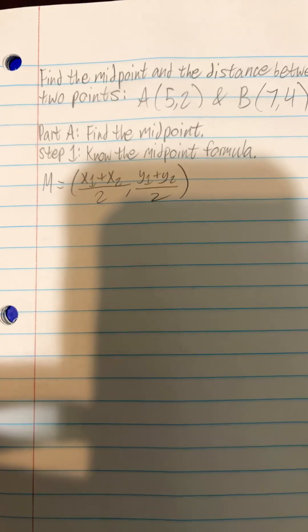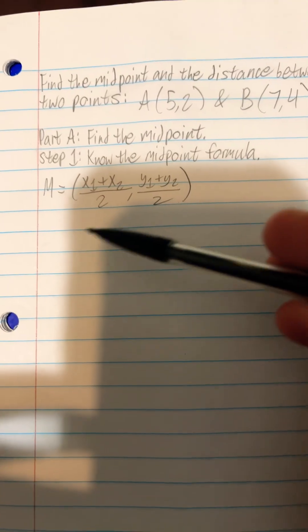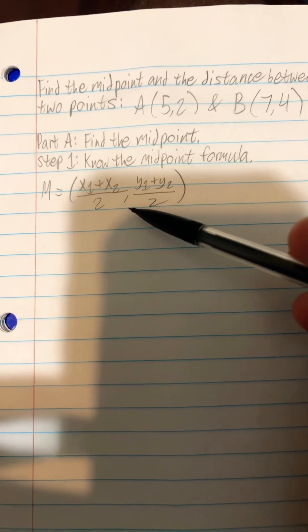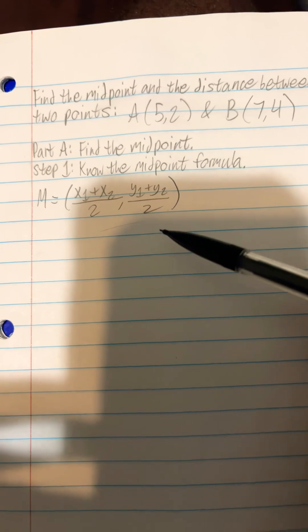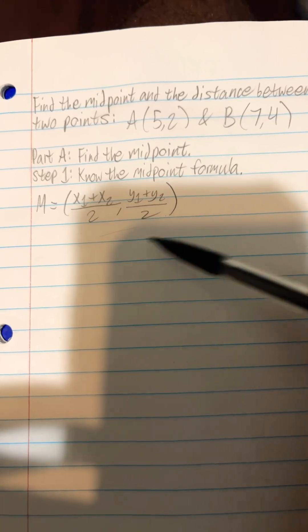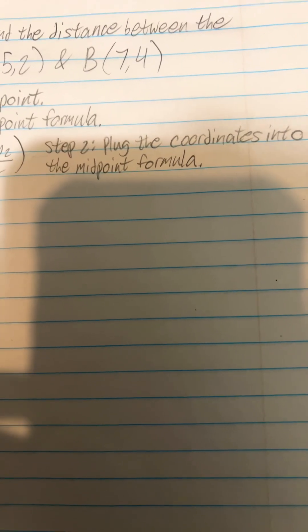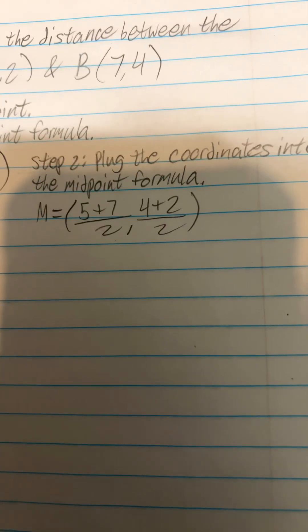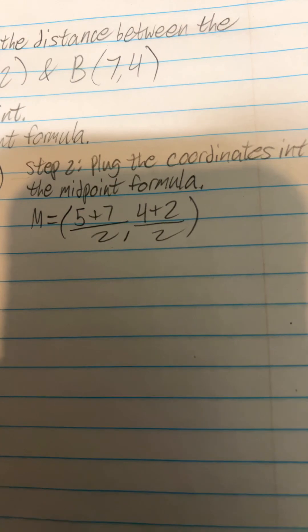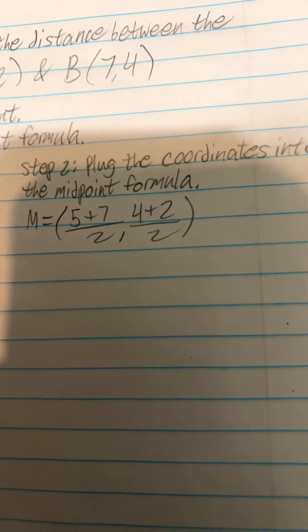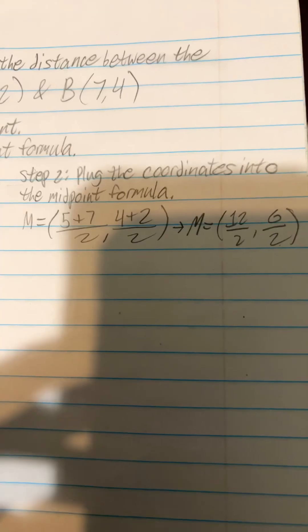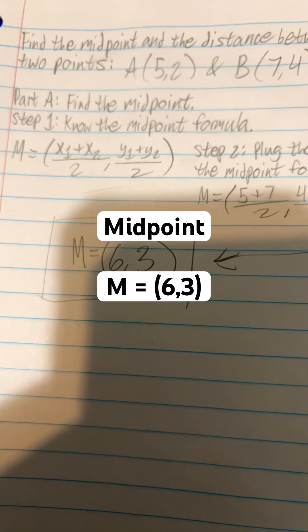Part A is to find the midpoint. The midpoint formula is M equals (x1 plus x2) over 2, and (y1 plus y2) over 2 — those are both coordinates. Step 2 is to plug the coordinates into the midpoint formula. That gives you M equals (5 plus 7) over 2, and (4 plus 2) over 2. Simplify it, and that gives you a midpoint of (6, 3).